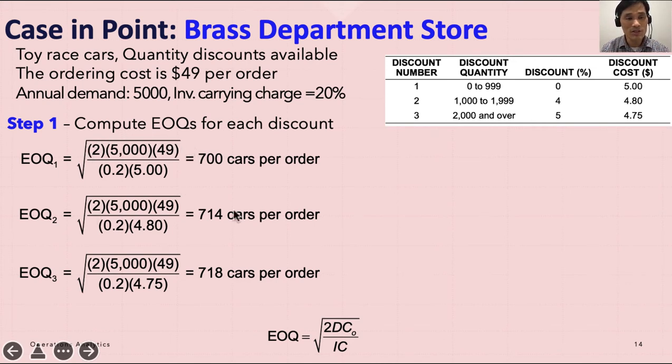The denominator is the same for all cases. However, the price is different because we have different prices. So the product price is $5 for level one or discount number one. So EOQ₁ is 700 cars per order. That's the economic order quantity you can use for this first discount interval.